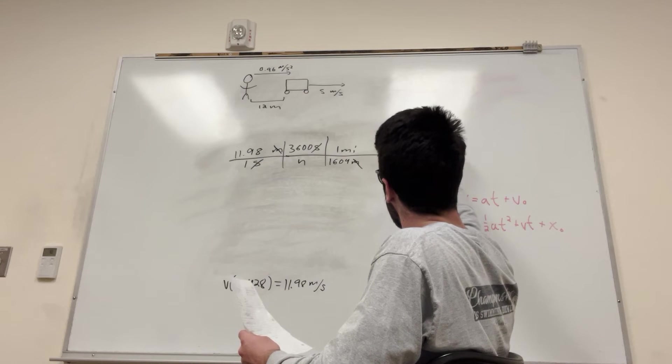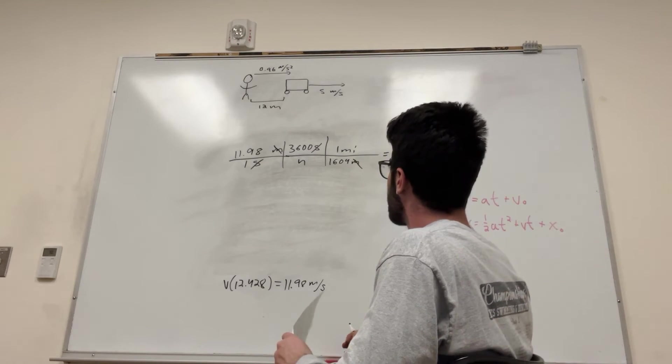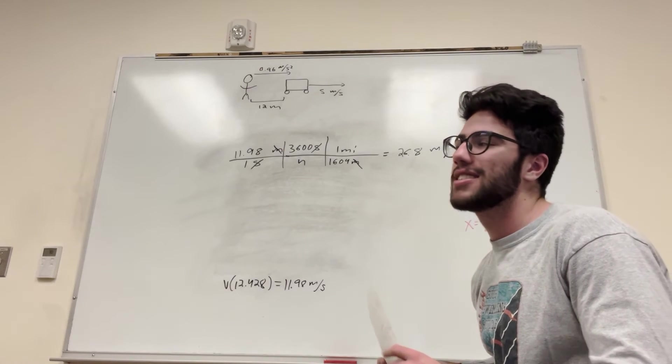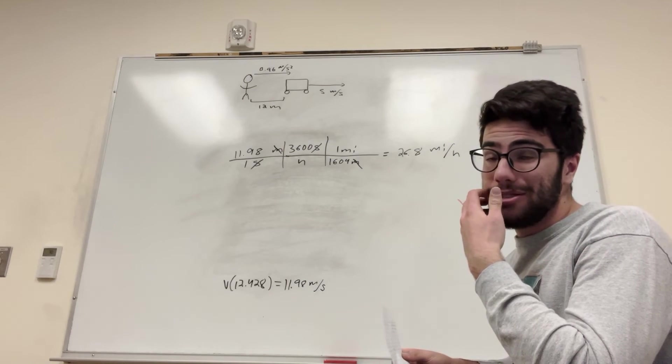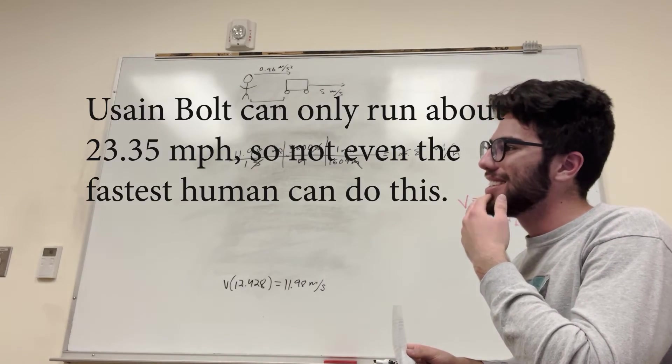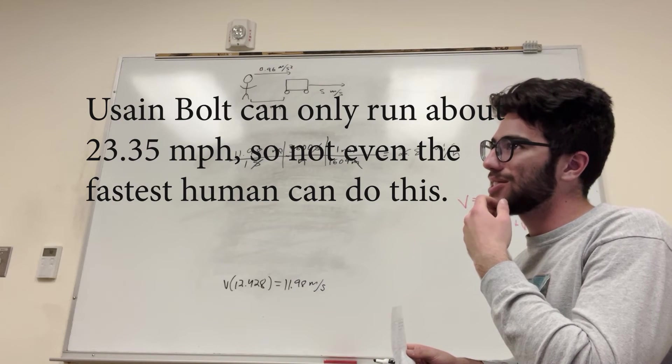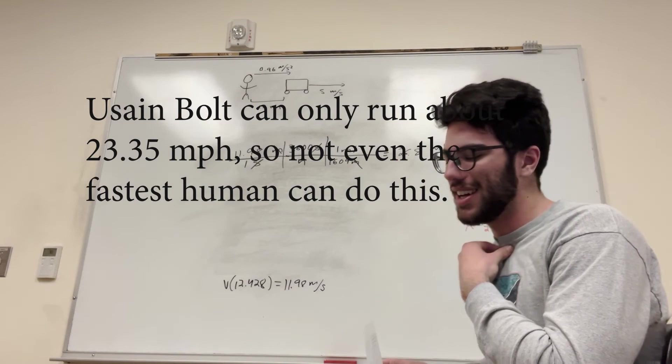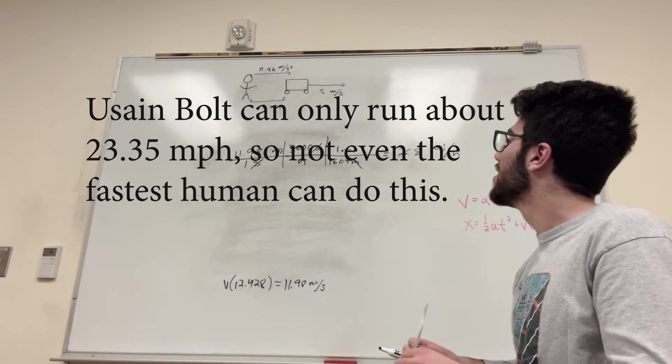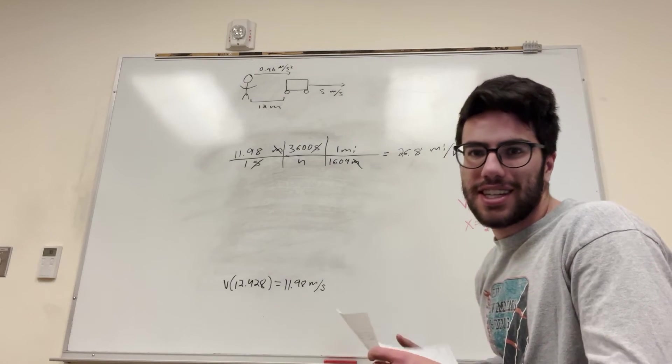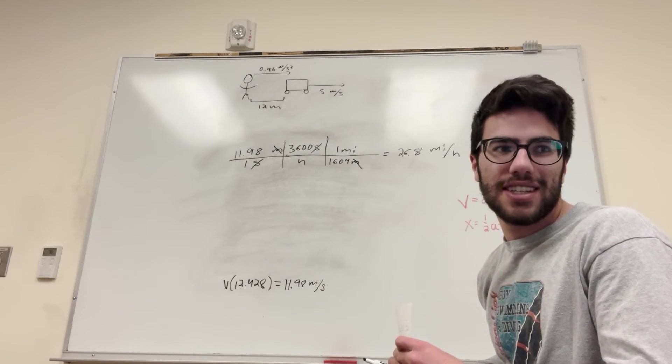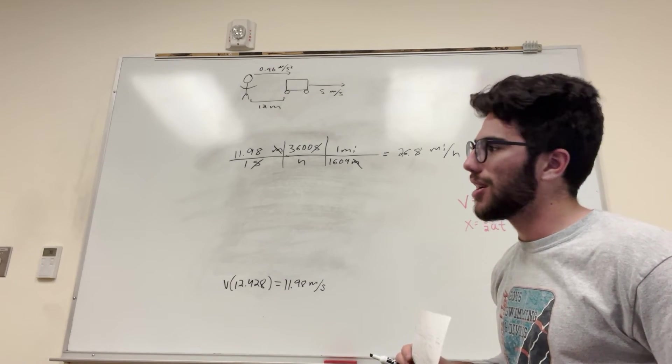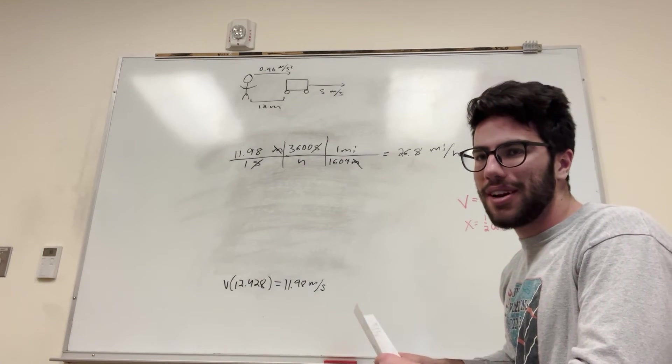26.8 miles per hour. I'm pretty sure Usain Bolt can run that fast, but I can't run that fast and I'm probably the average college student. So 26.8 miles an hour, not realistic. I don't think a college student can run that fast. Another reason why this problem is wrong.